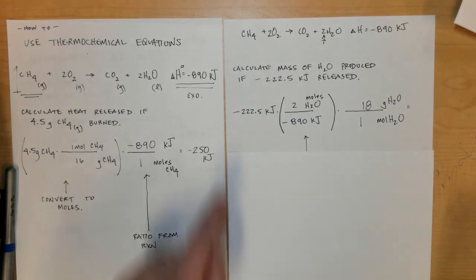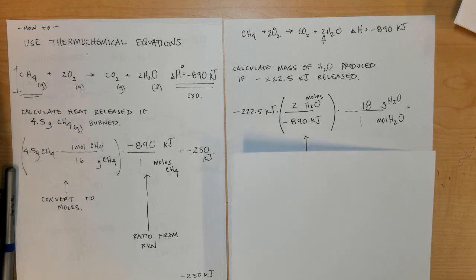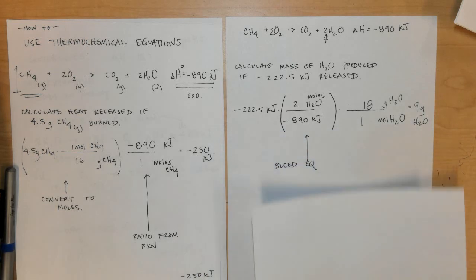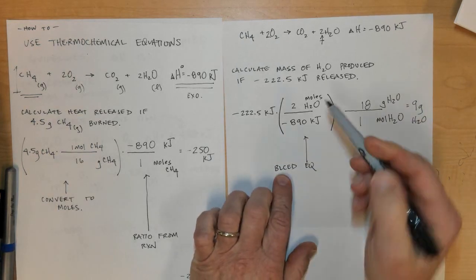Multiply these together, times 2 divided by 890 times 18, and I end up with 9 grams of H2O.